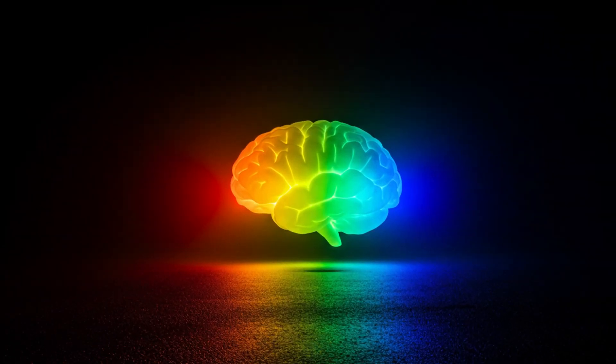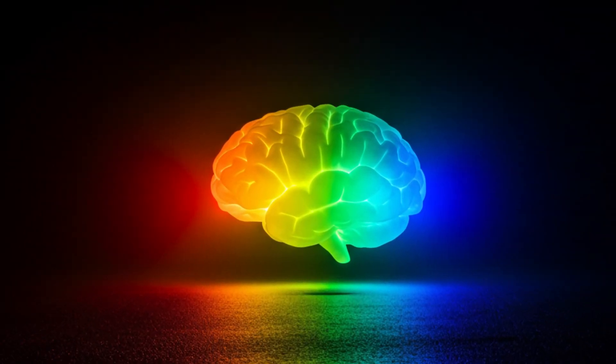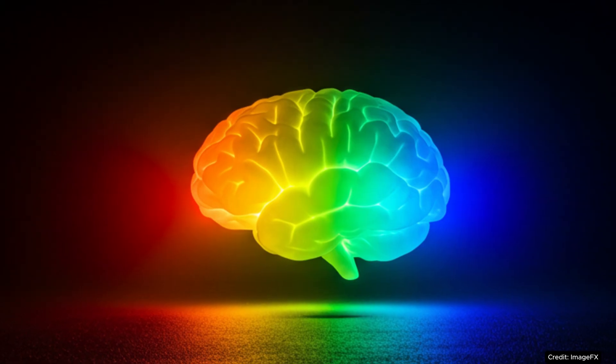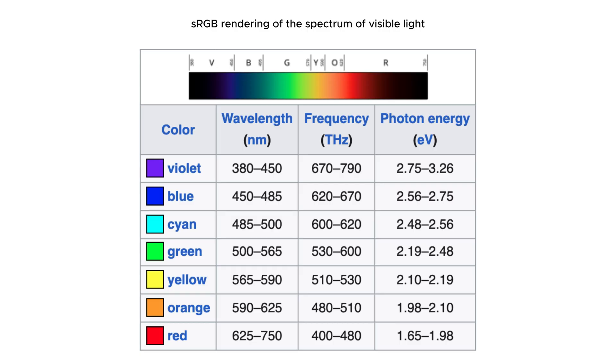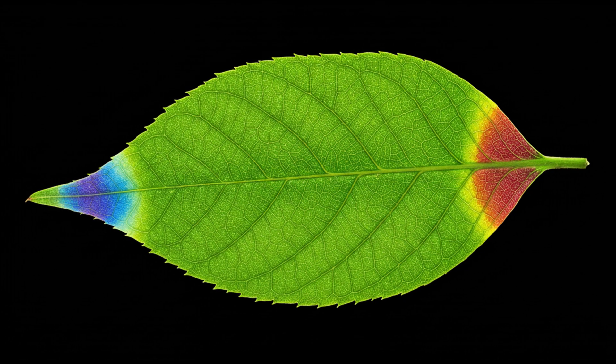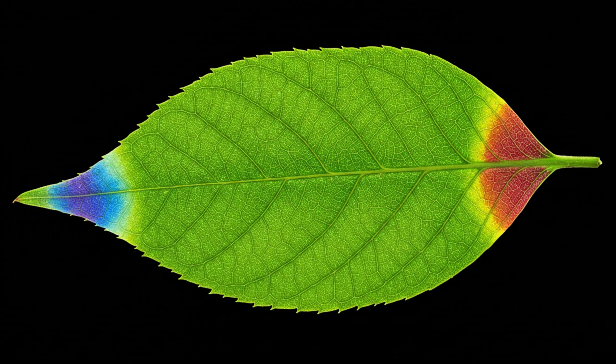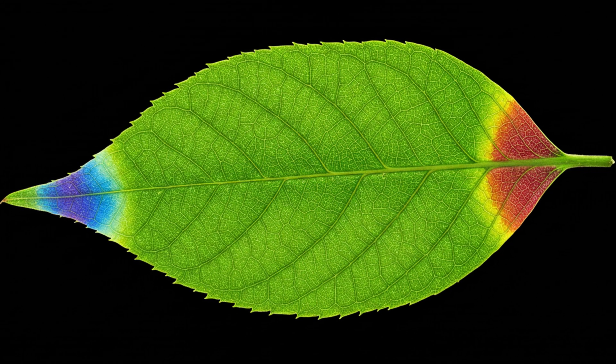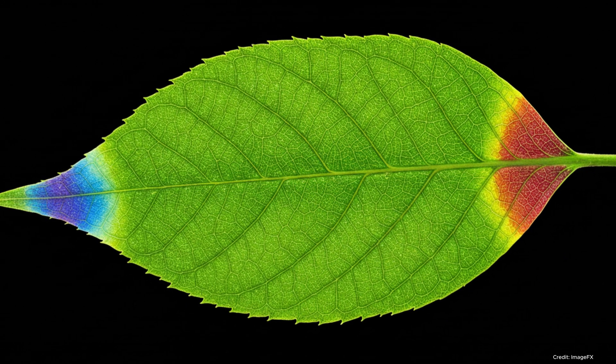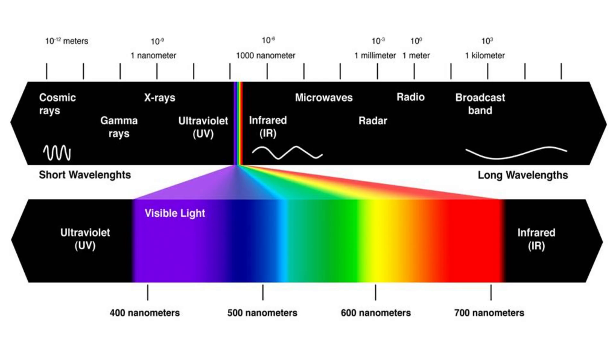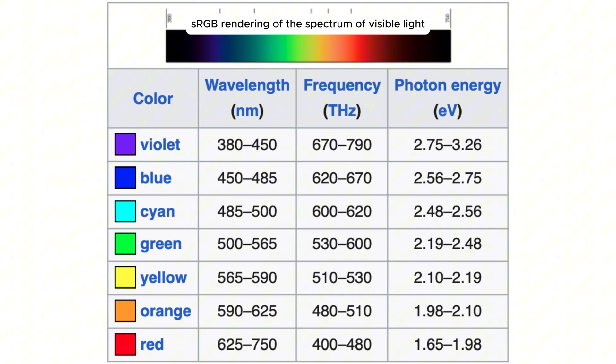Color exists only in our minds. The physical world consists merely of electromagnetic waves between 400 and 700 nanometers. When we call a leaf green, we are describing how it reflects wavelengths around 550 nanometers while absorbing others. Our brains transform these wavelengths into the sensation of color.